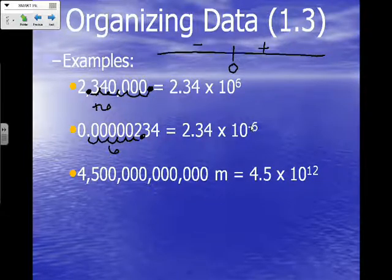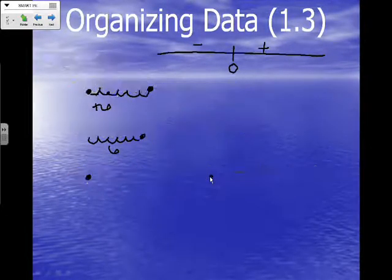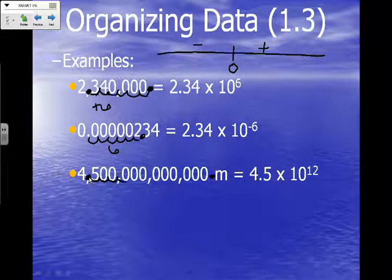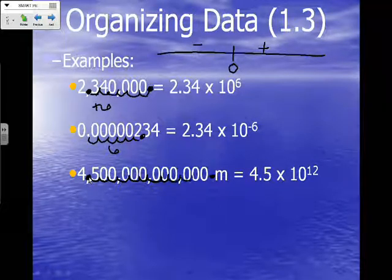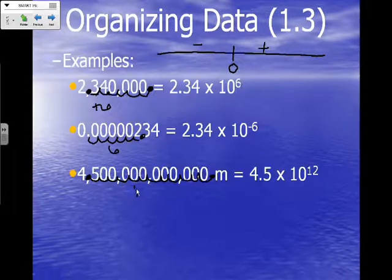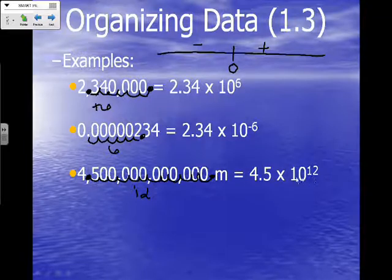Our third example is a very large number. We place the new decimal, and since the old decimal isn't shown, we place it at the far right. We count our jumps — twelve jumps total. We moved right on the number line, so our exponent is a positive 12. Our new number is 4.5 times 10 to the 12th power.